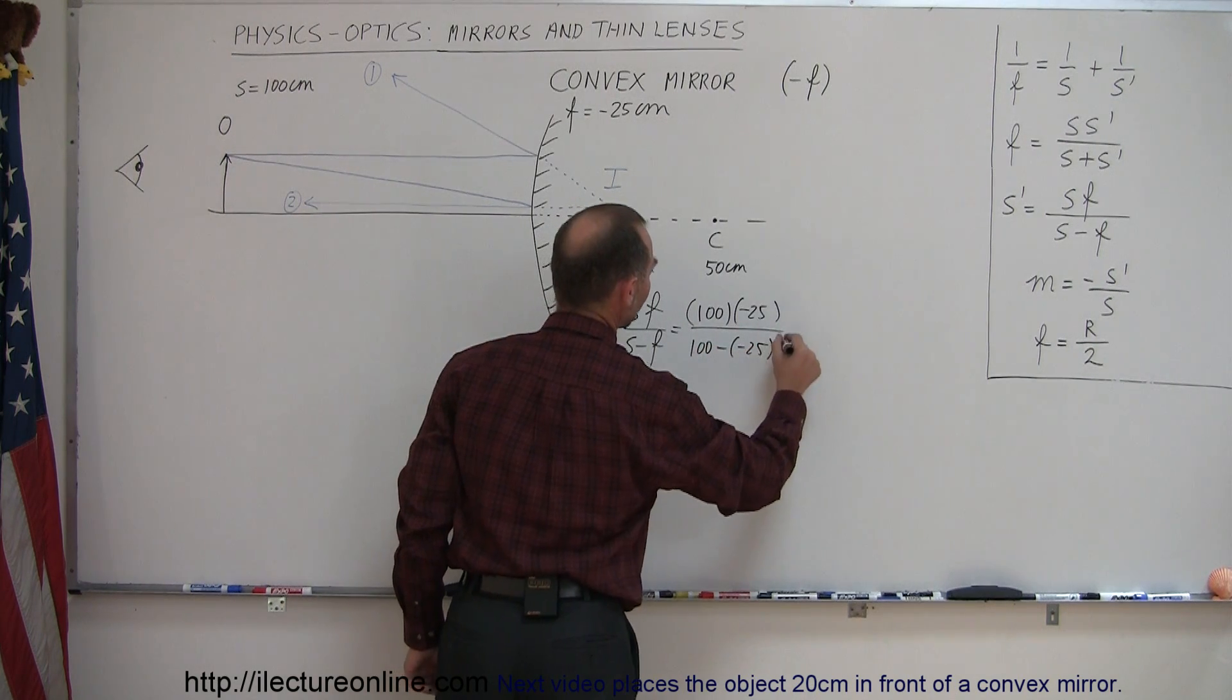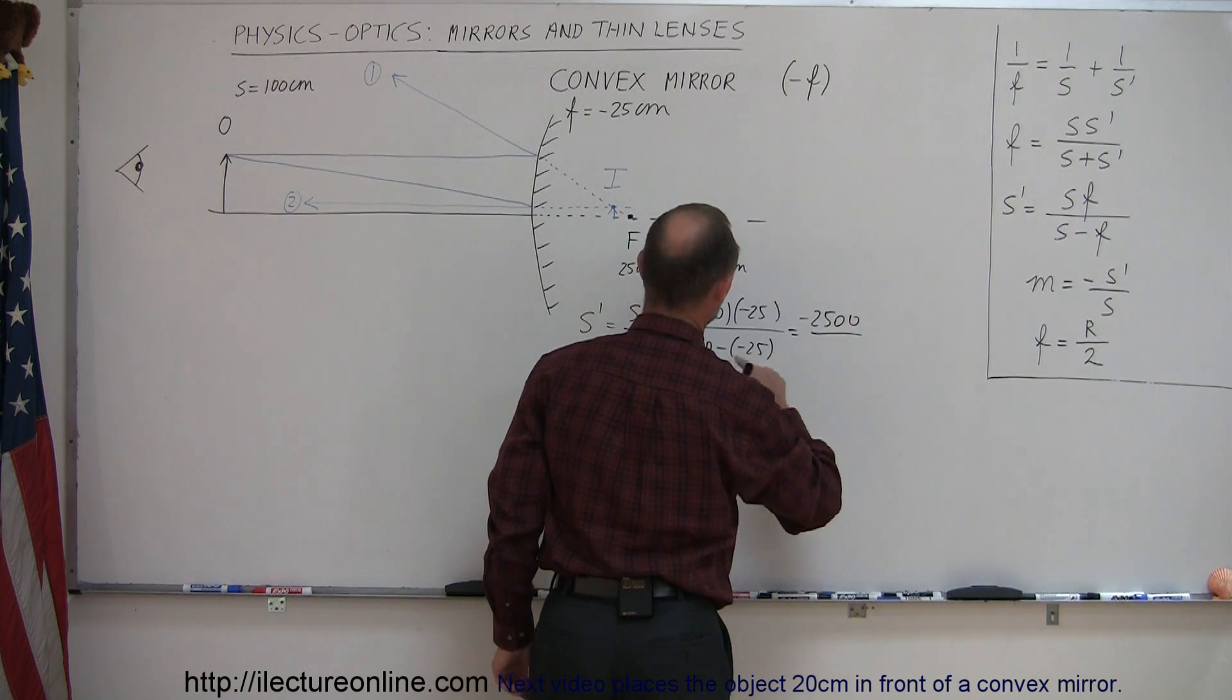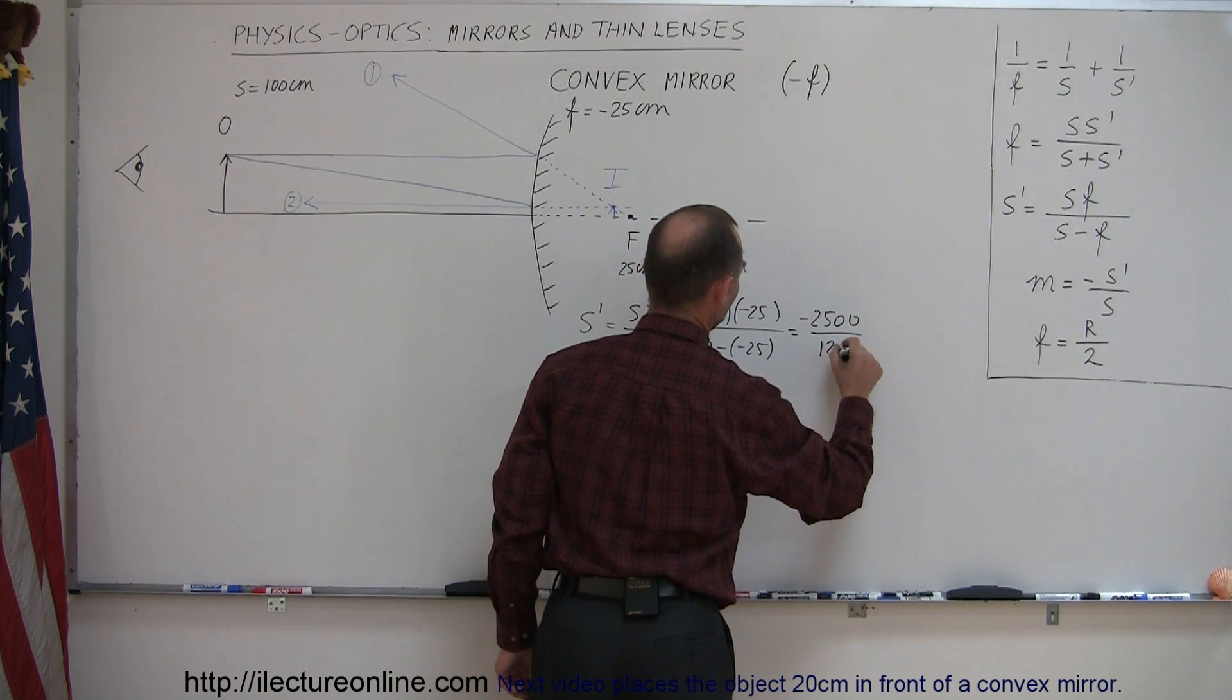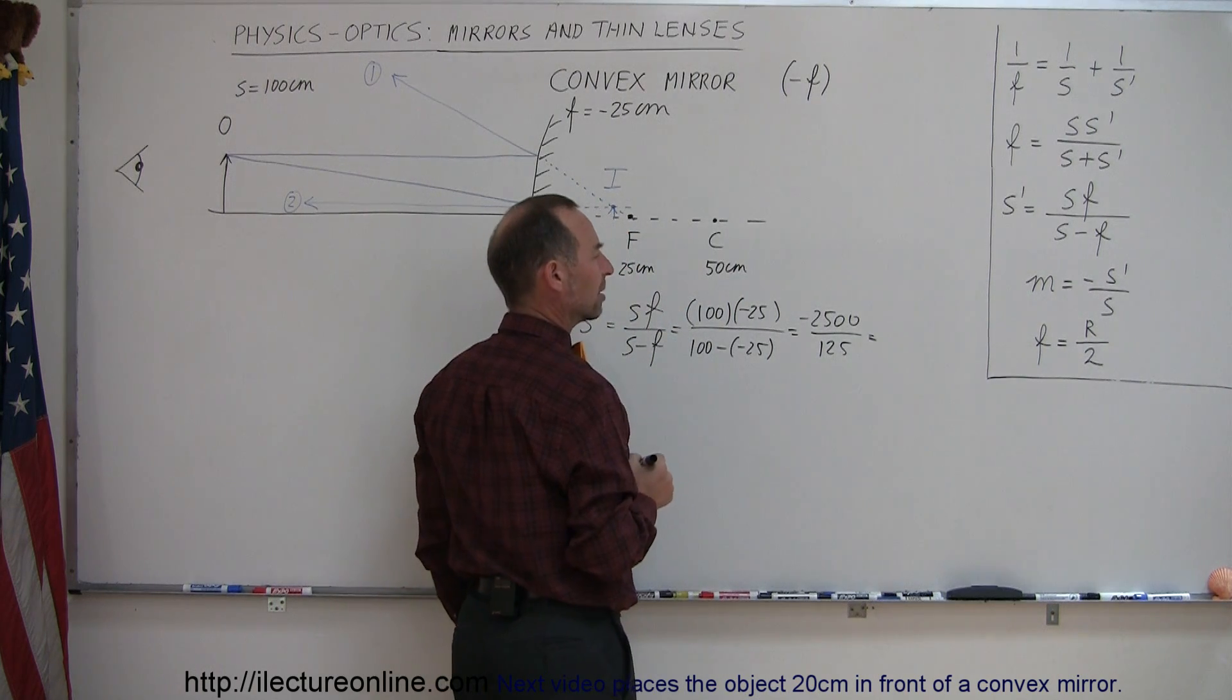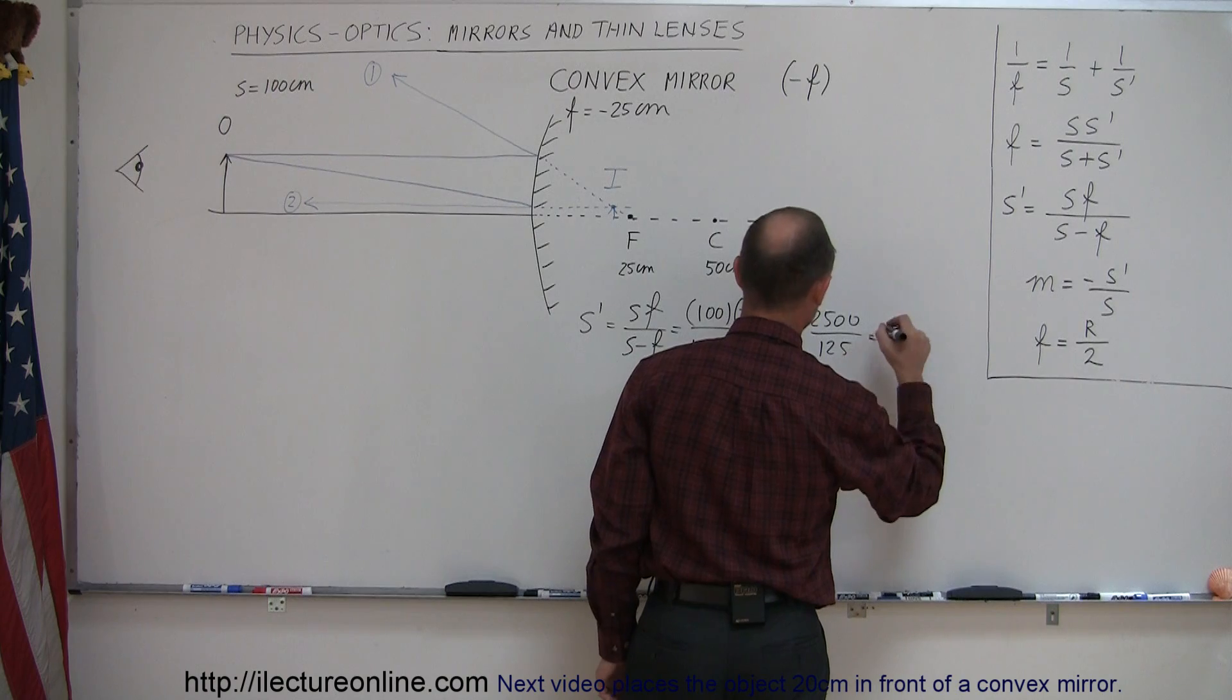minus minus 25, and so this is equal to minus 2500 over 125, which looks like it's minus 20. Yes, minus 20.